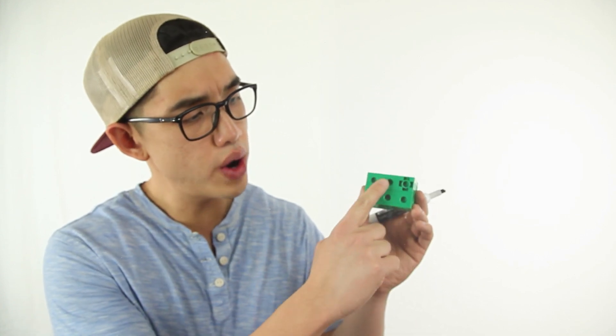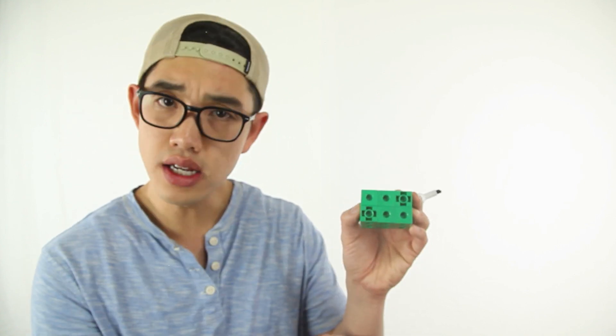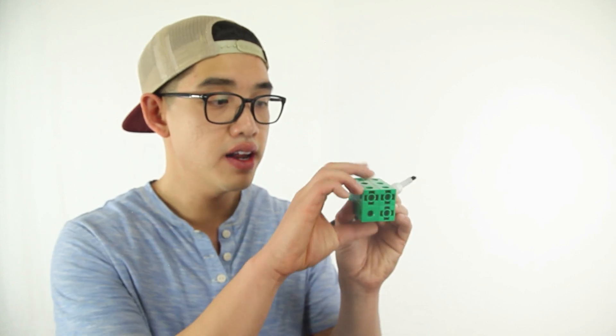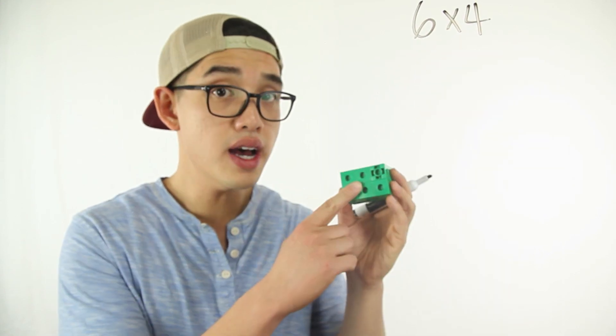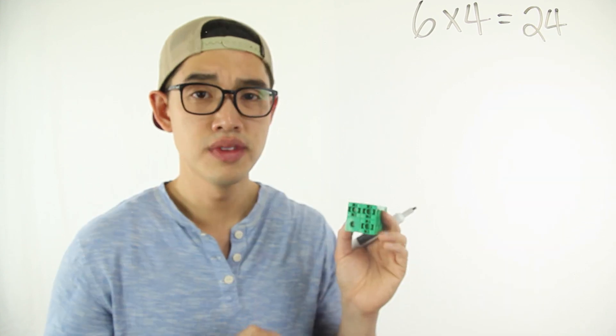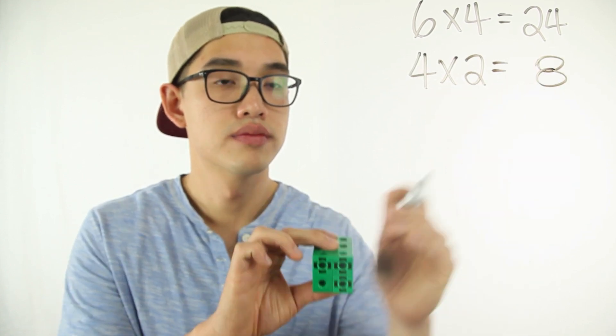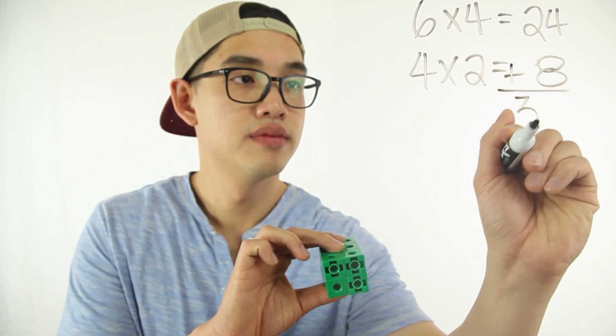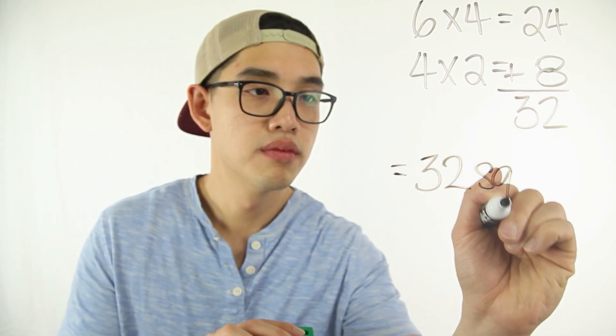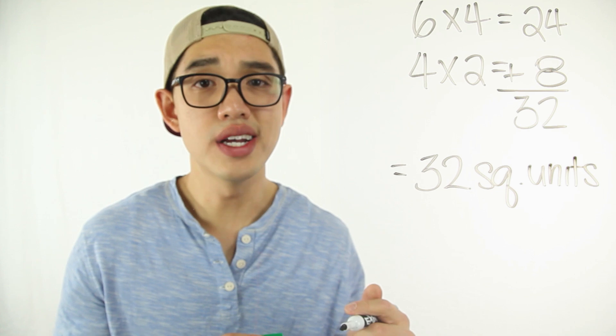Alright, let's take a look at this problem. I see that there are six square units on the first side. There are also another six square units on this side, another six on this side, another six on this side, four on this side, and four square units on this last side. So I can add up all the square units — six times four because four sides have six square units, plus four times two because two of the sides have four square units. My answer is going to be 32 square units as my surface area.